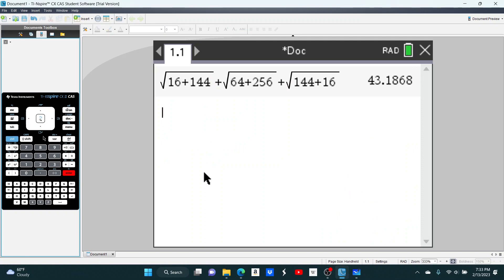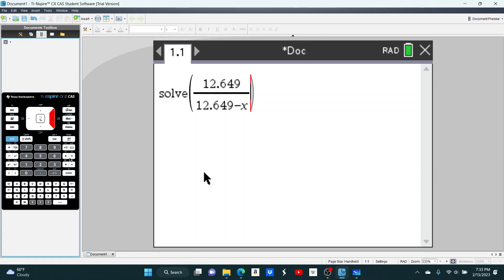Okay. So, I'm going to go over to my student software real quick. And go to my solver. So, on the left, we have 12.649 over 12.649 minus X. That's the adjacent side divided by the opposite side for the left angle. And now for the right angle, same thing. Adjacent side divided by the opposite side.